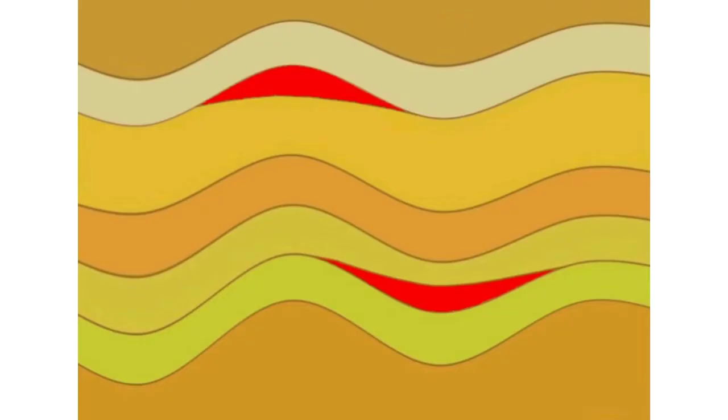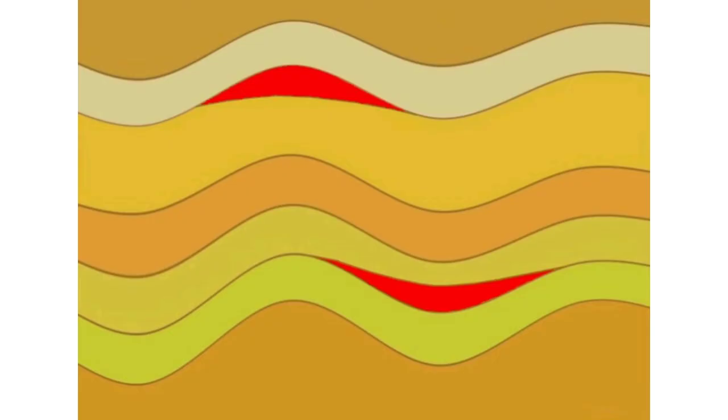Then comes the phacolith. Phacolith is a lens-shaped structure and it is a slightly distinct feature because it forms in folds. In a particular fold there are anticlines and synclines, so phacoliths can be formed on anticlines as well as synclines, and their shape is almost lens-shaped.